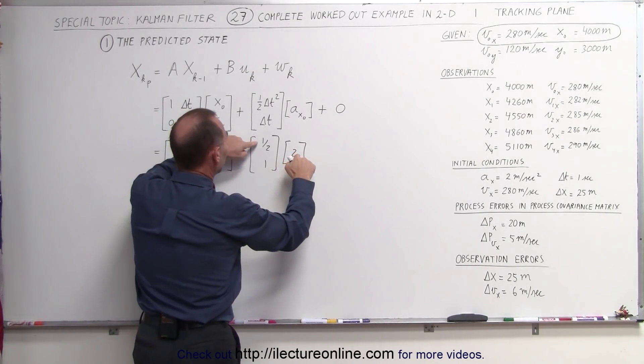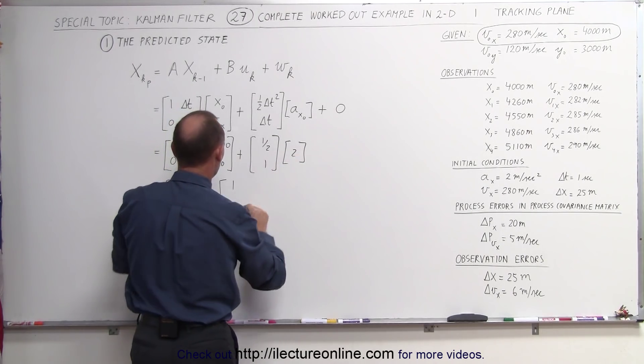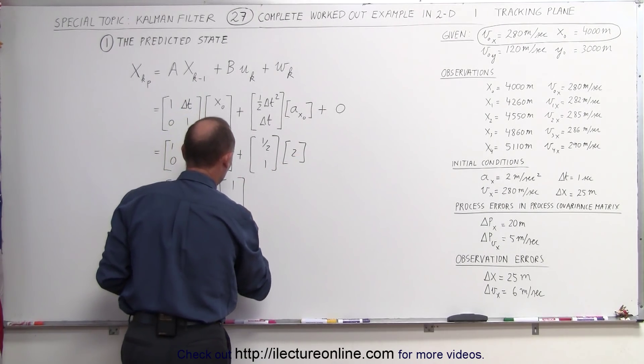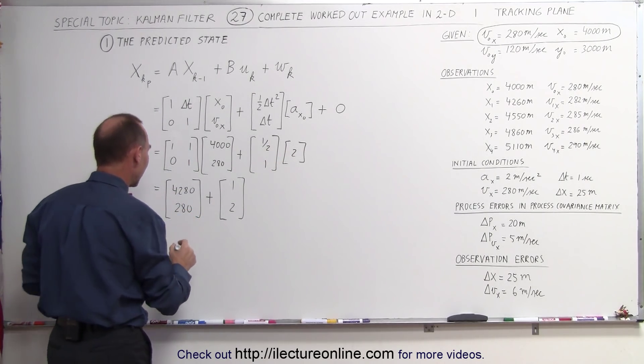So plus, that will be 1 half times 2, which is 1, and 1 times 2, which is 2. So these will be the adjustments in the position and the velocity based upon the acceleration and the time that's elapsed so far.